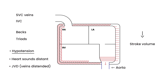Stroke volume is directly tied to cardiac output. Remember the equation: cardiac output equals stroke volume times heart rate. So when stroke volume goes down, so does cardiac output. When cardiac output goes down, less blood is being pumped into the aorta and into the circulation. That means the pressure of blood in the circulation is lower — and that's why you get low blood pressure.